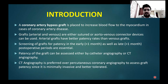A CABG graft is placed to increase blood flow to the myocardium in cases of coronary artery disease. Grafts, arterial or venous, are either sutured or AV connector devices can be used. Arterial grafts have better patency rates than venous grafts. Screening of grafts for patency in the early, i.e. less than one month, as well as late, i.e. more than one month, post-operative periods are essential. Patency of grafts can be assessed either by catheter angiography or CT angiography.